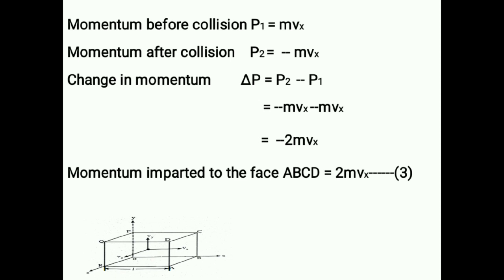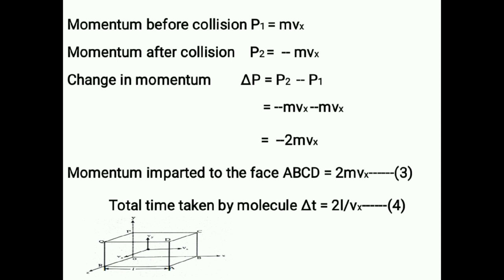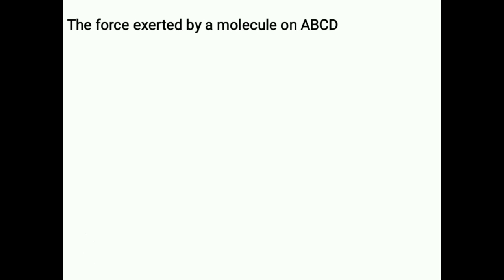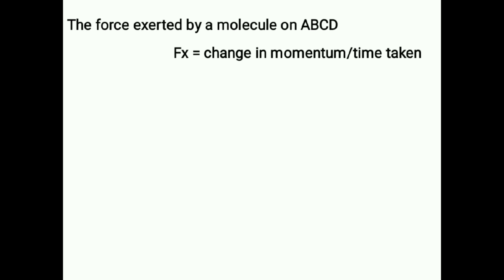The total time taken by the molecule to travel from PQRO to ABCD and back is delta T equals 2L by Vx — equation 4. The force exerted by the molecule on face ABCD, by Newton's second law, is Fx equals change in momentum by time taken, that is 2mVx divided by 2L/Vx. The 2s cancel, giving Fx equals mVx² by L — equation 5.